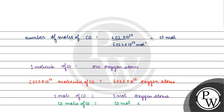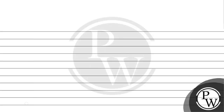So 10 moles of CO gives 10 moles of oxygen atoms. Since 1 gram atom equals 1 mole of an atom, we can say there are 10 gram atoms of oxygen.